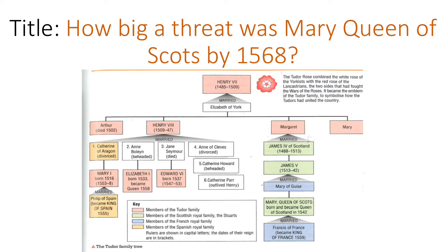That's why Mary Queen of Scots has a legitimate claim to the throne - you can directly trace her lineage all the way to Henry VII. She is the main Catholic heir to the English throne after Elizabeth. Next we're going to look at Mary's early life, the ups and downs, and explain why by the end of the 1560s she is based in England and posing such an important threat to Elizabeth.